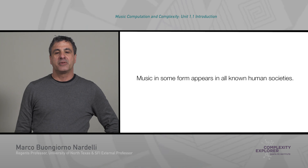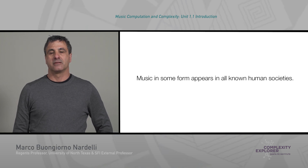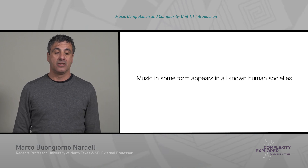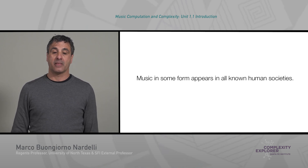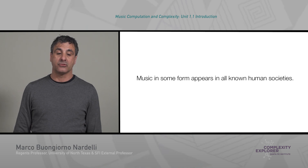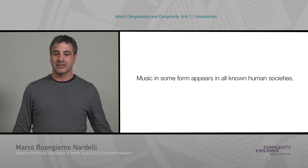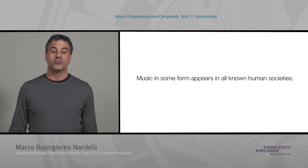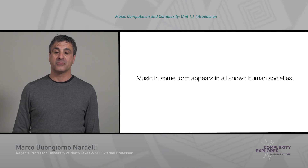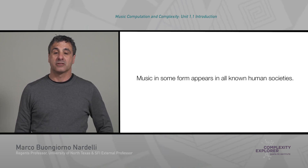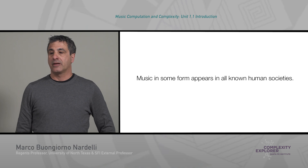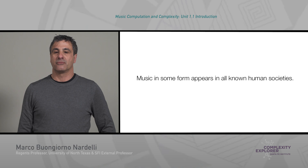Music in some form appears in all human societies — a real kind of universal trait of humanity. We have music all over the world and examples of music that date back to the Neanderthals. So 40,000 years ago, we have examples of musical instruments that were used to produce music and sound of different forms. All cultures have some form of music, whether for enjoyment, for ritual, for societal events and so on.